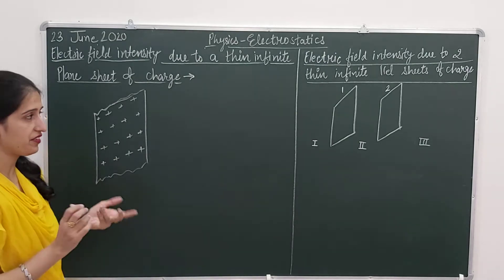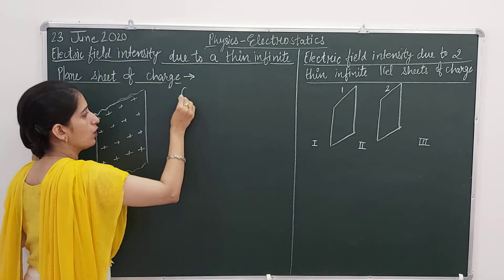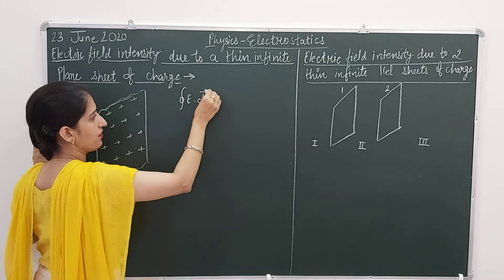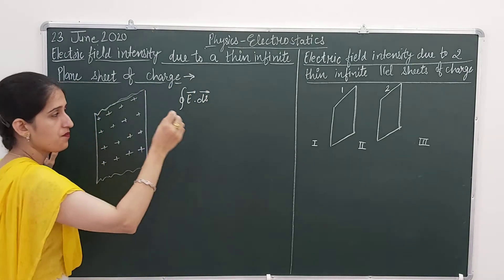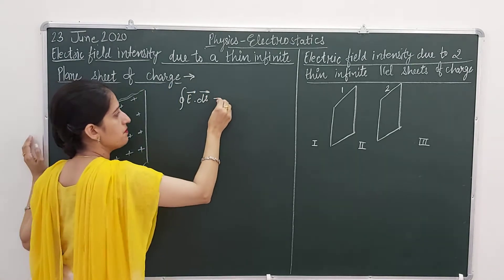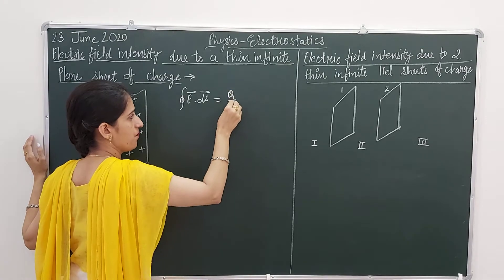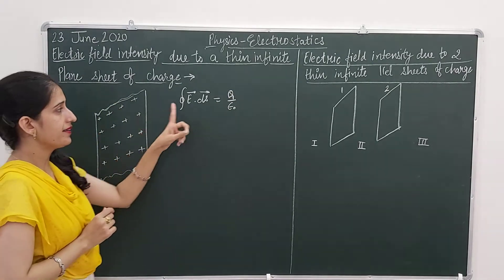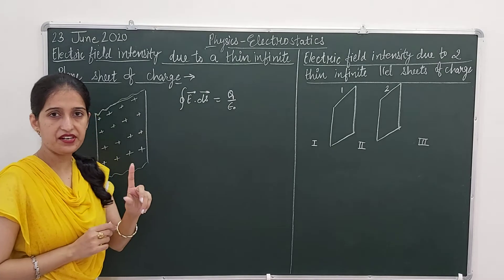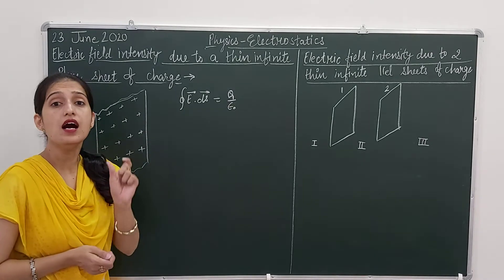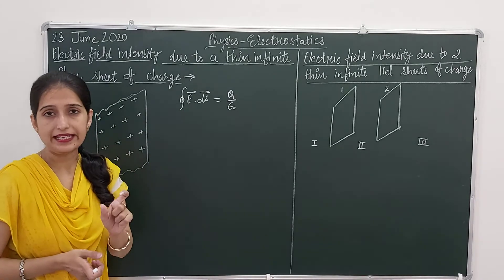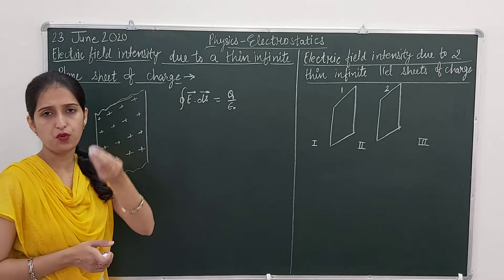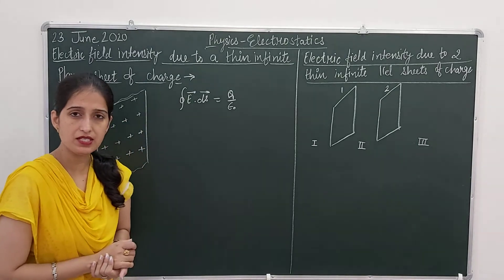Let's start with the definition of Gauss's law. According to Gauss's law, electric flux is given by total charge upon epsilon-naught. Here E is the electric field intensity and dS is the small area. We choose a small area by choosing a Gaussian surface.